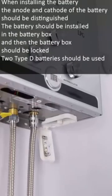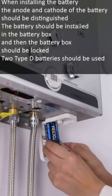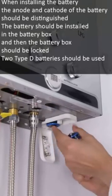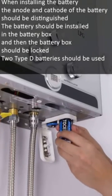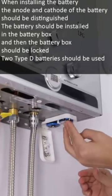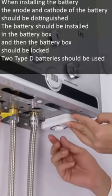When installing the battery, the anode and cathode of the battery should be distinguished. The battery should be installed in the battery box and then the battery box should be locked. Two Type D batteries should be used.